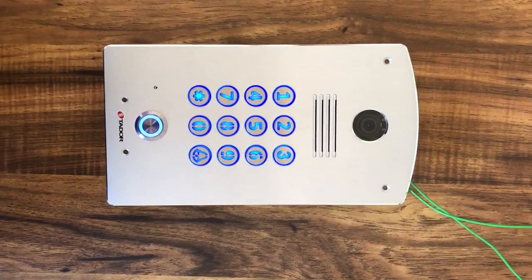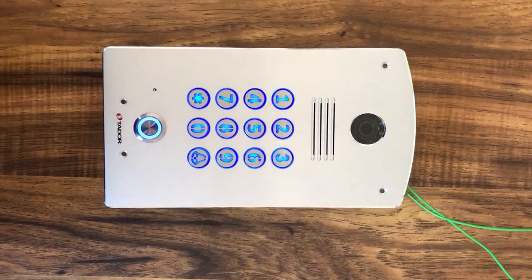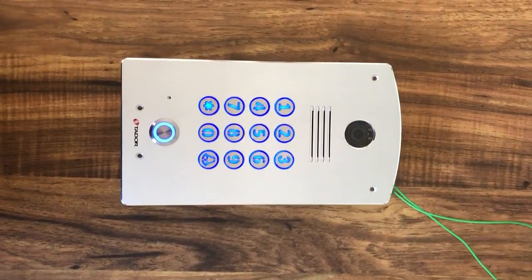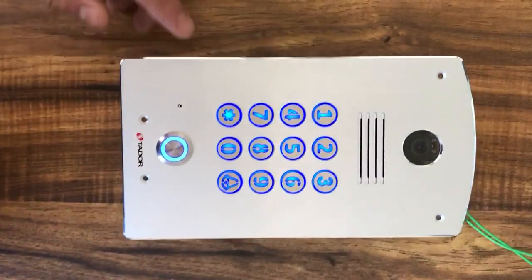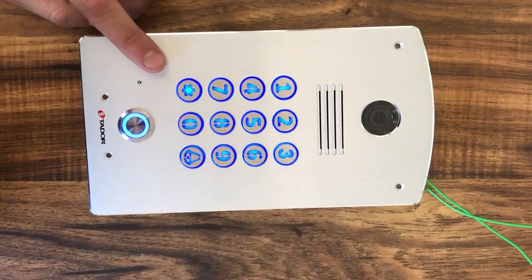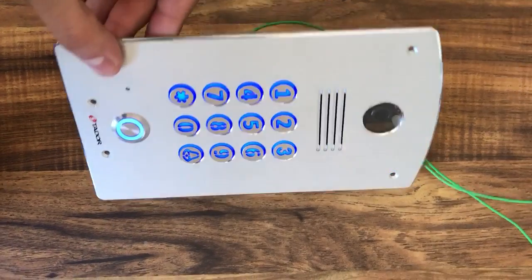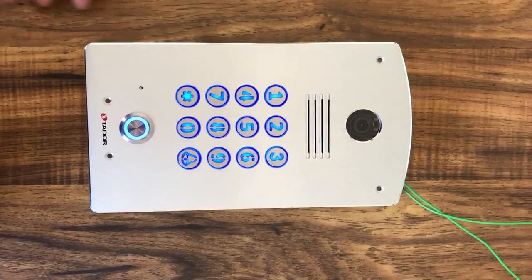Hi, today I'm going to explain the TADOR two-wire intercom system. First, the panel. It is made from aluminum anodized CNC. Very nice, slim and clean.